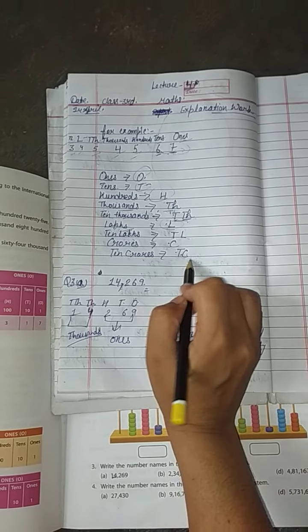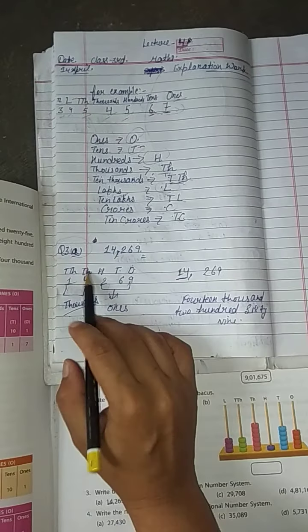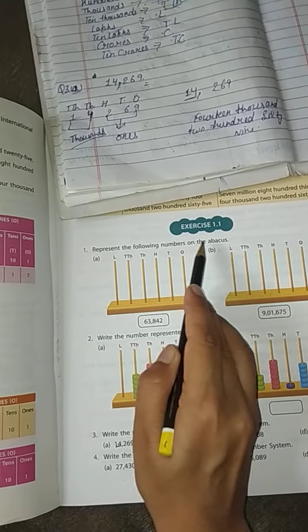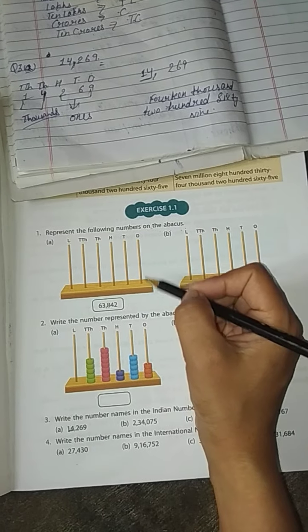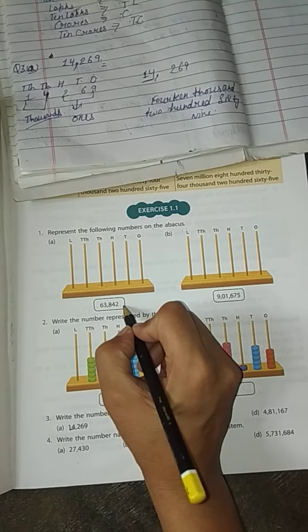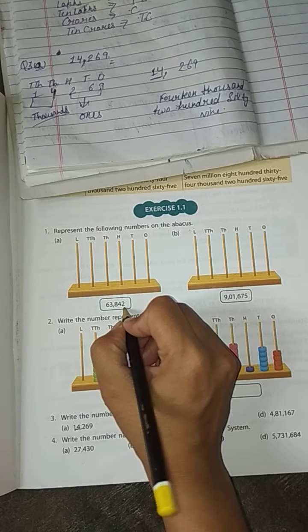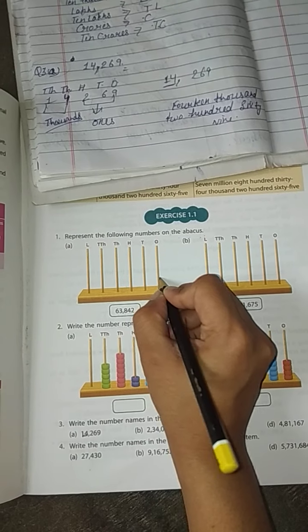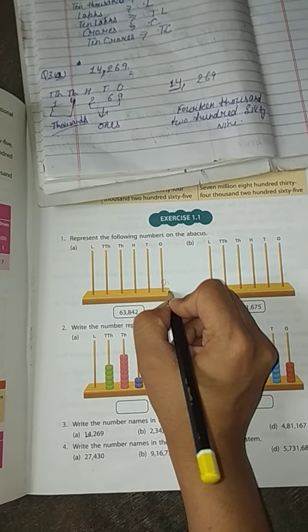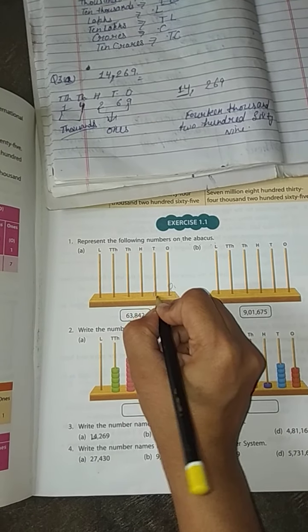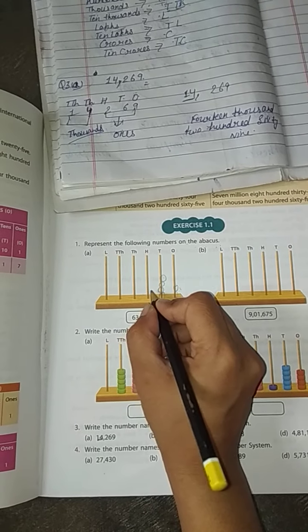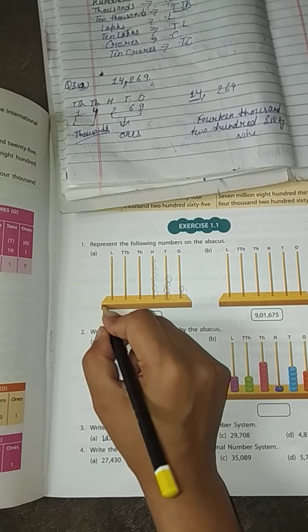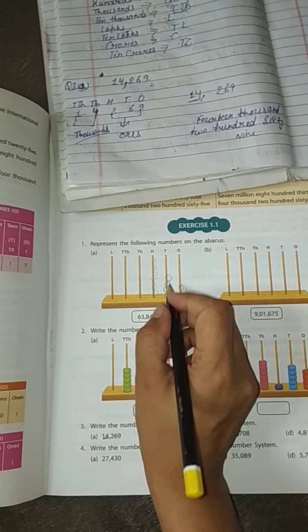For example, we present the following numbers on the abacus. Firstly, 6 3 8 4 2 is a given number. Two under ones, one two. This is called beads. Four, one two three four. Eight, one two three four five six seven eight. In the same way, the rest is in the same way.